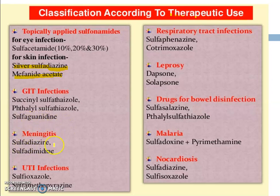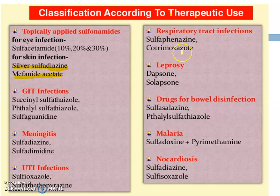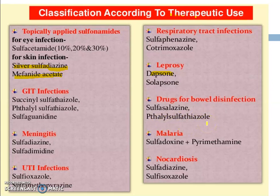Meningitis: sulfadiazine and sulfadimidine. Urinary tract infection: sulfisoxazole and sulfamethylpyridazine. Respiratory tract infection: sulfaphenazole and cotrimoxazole. Leprosy: dapsone is the most important drug, and solapsone. Bowel infections: sulfasalazine and phthalyl sulfathiazole.